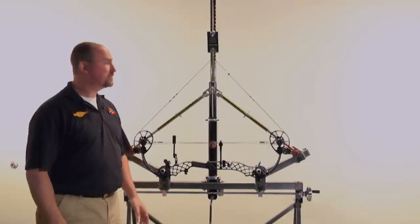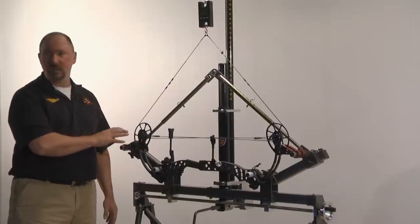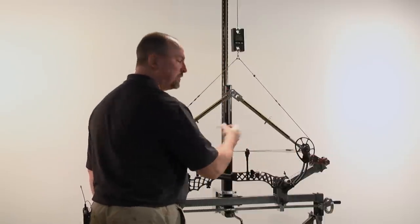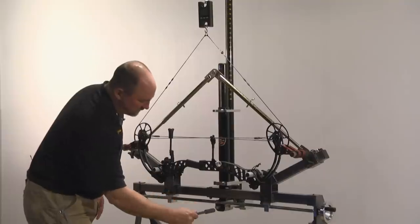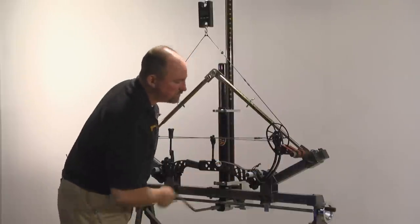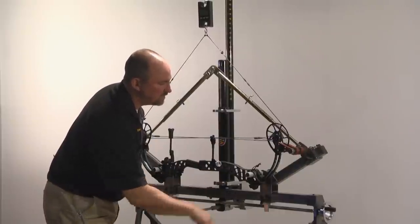One of the nicest features about the ProDraw is that it will allow us to time or synchronize the bow's cams without removing it from the press. Here we've already drawn the bow, checked the timing. We have to make an adjustment. We're going to place the handle back on the press, and bring this up where it's very close, but not actually pressing the bow.